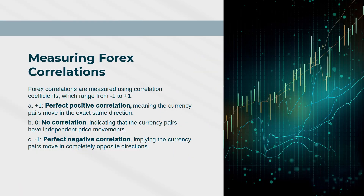Measuring Forex Correlations. Forex correlations are measured using correlation coefficients, which range from minus 1 to plus 1. Plus 1 indicates perfect positive correlation, meaning the currency pairs move in the exact same direction. 0 indicates no correlation, meaning the currency pairs have independent price movements. Minus 1 indicates perfect negative correlation, implying the currency pairs move in completely opposite directions.